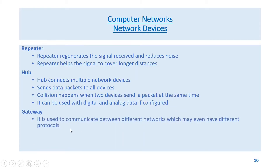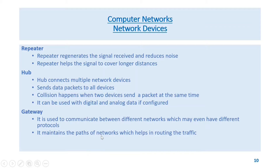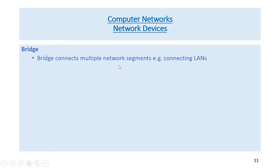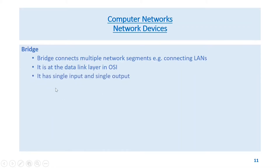A gateway is used to communicate between different networks, which may even have different protocols. It maintains the paths of networks, which helps in routing the traffic. It works at any layer in the OSI model. A bridge connects multiple network segments, for example connecting LANs. It operates at the data link layer in the OSI model.